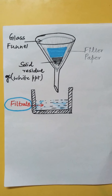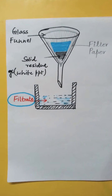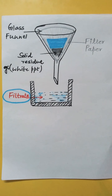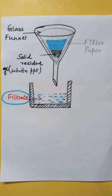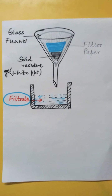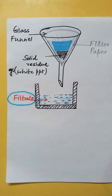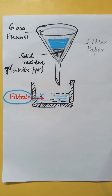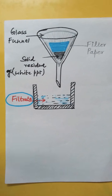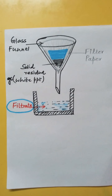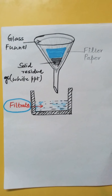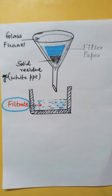I will show you an image to make it clear. First, you get a solution. You put a filter paper in a funnel, then pour the solution into it. Some solid residue will appear and remain in the filter paper, while the liquid extracted from it pours down into the beaker. This liquid in the beaker is the filtrate.